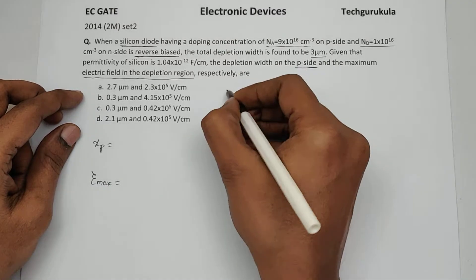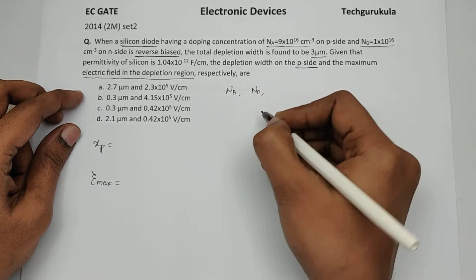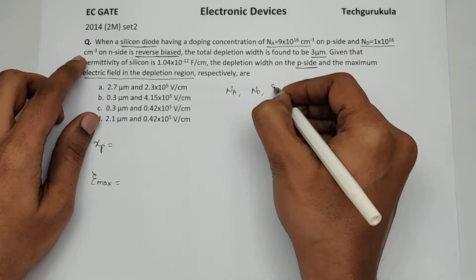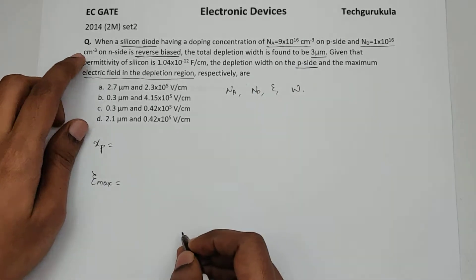Given data, we have Na given, Nd is given and epsilon is given and even depletion width is given.